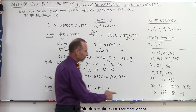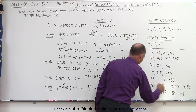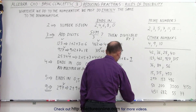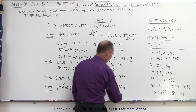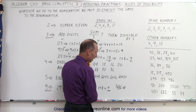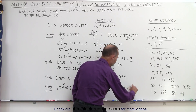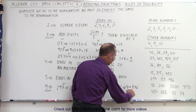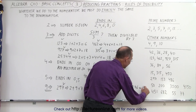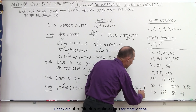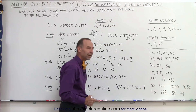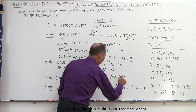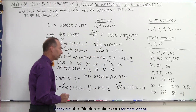Let's try the number 486. Adding all the digits: 4 plus 8 plus 6 equals 18. Since 18 is divisible by 9, the whole number 486 is divisible by 9 as well.